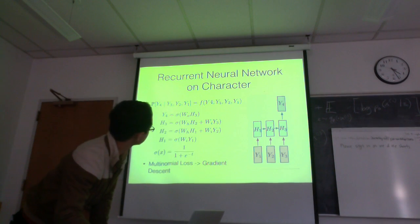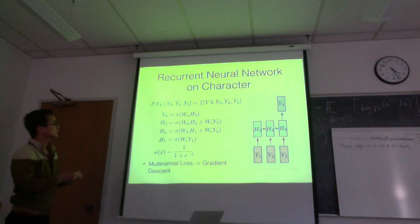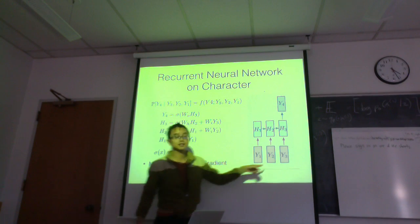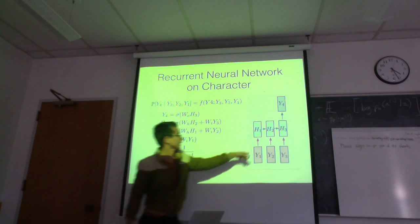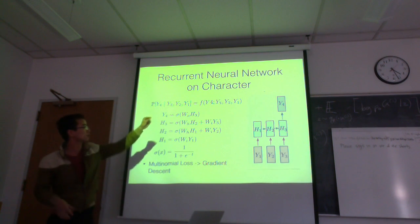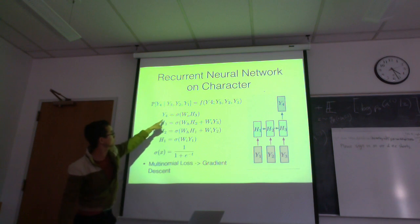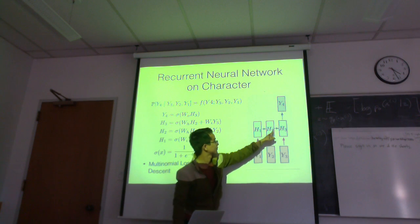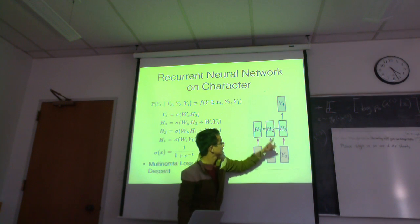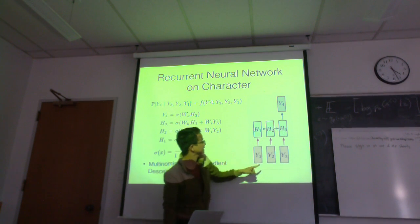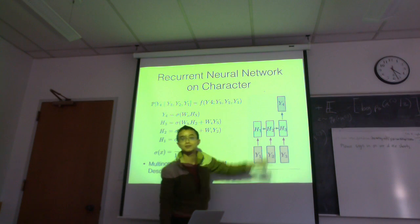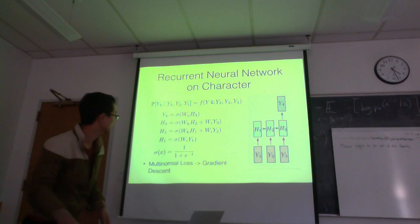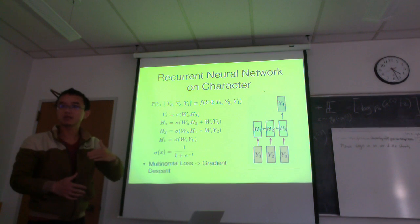The model I'm using is a Recurrent Neural Network. For those new to this model, it's basically trying to model the fourth character conditioned on the previous three characters, with a hidden layer. The relation between Y4 and Y1, Y2, Y3 is in functional form: Y4 is a function of S3, S3 is a function of S2 and Y3, and the transition function is the same at each step. The loss function is multinomial loss and we train with gradient descent.